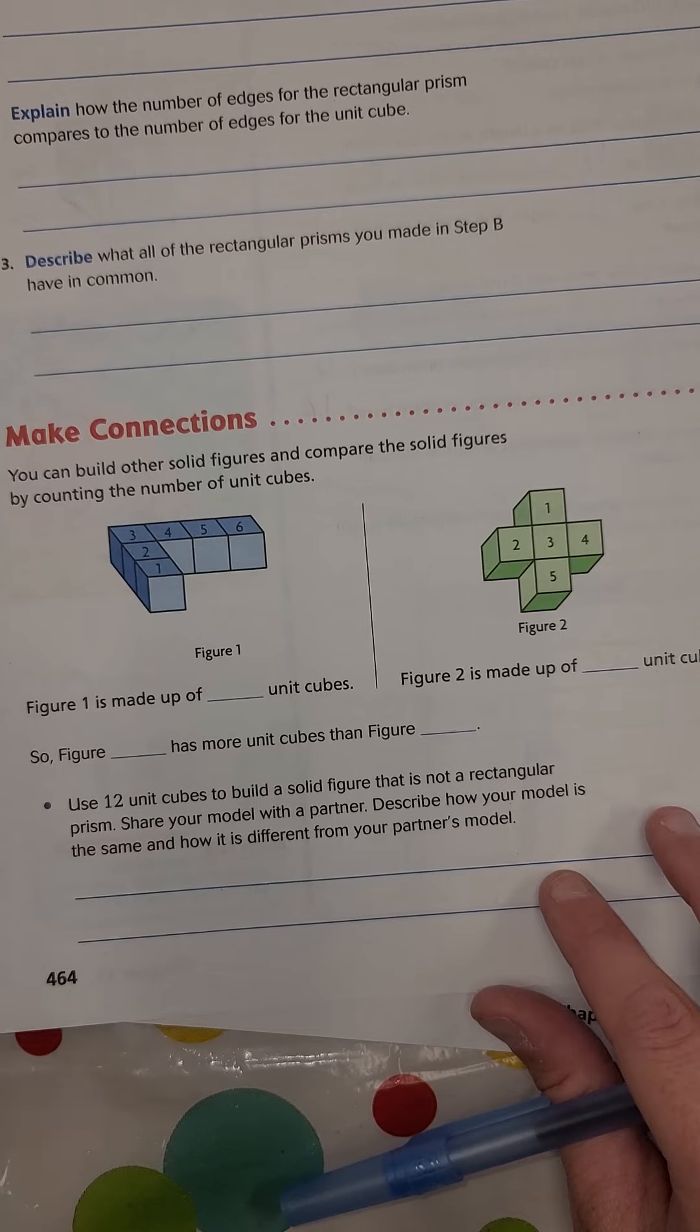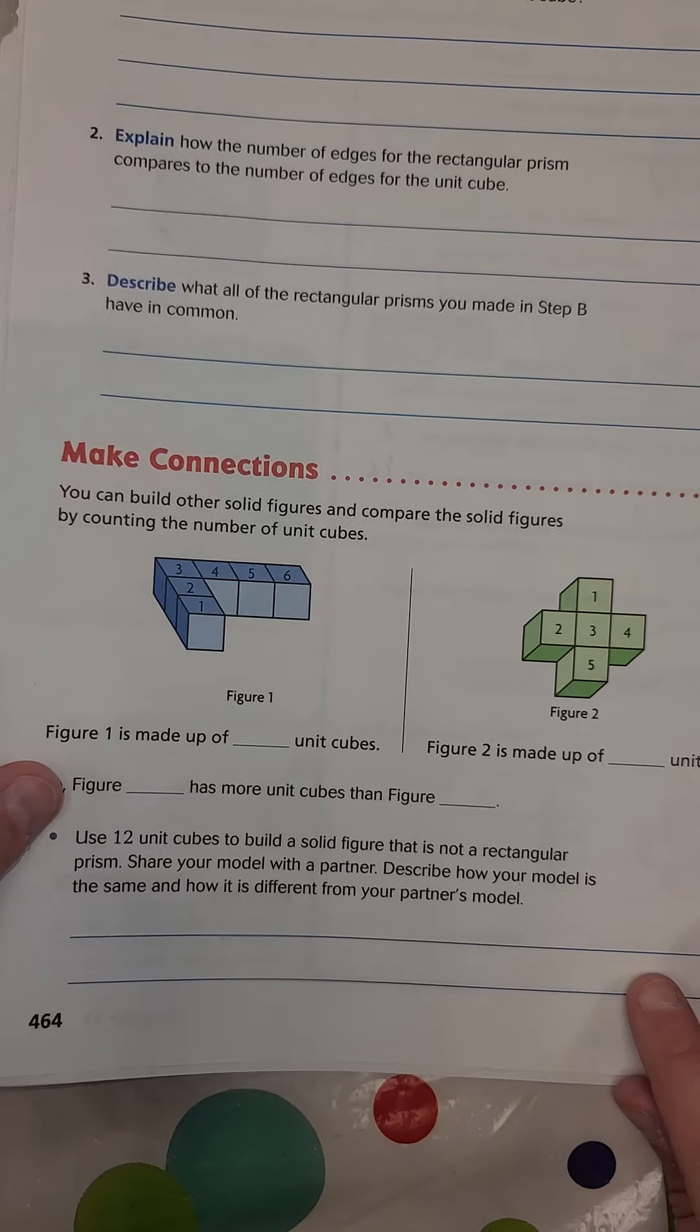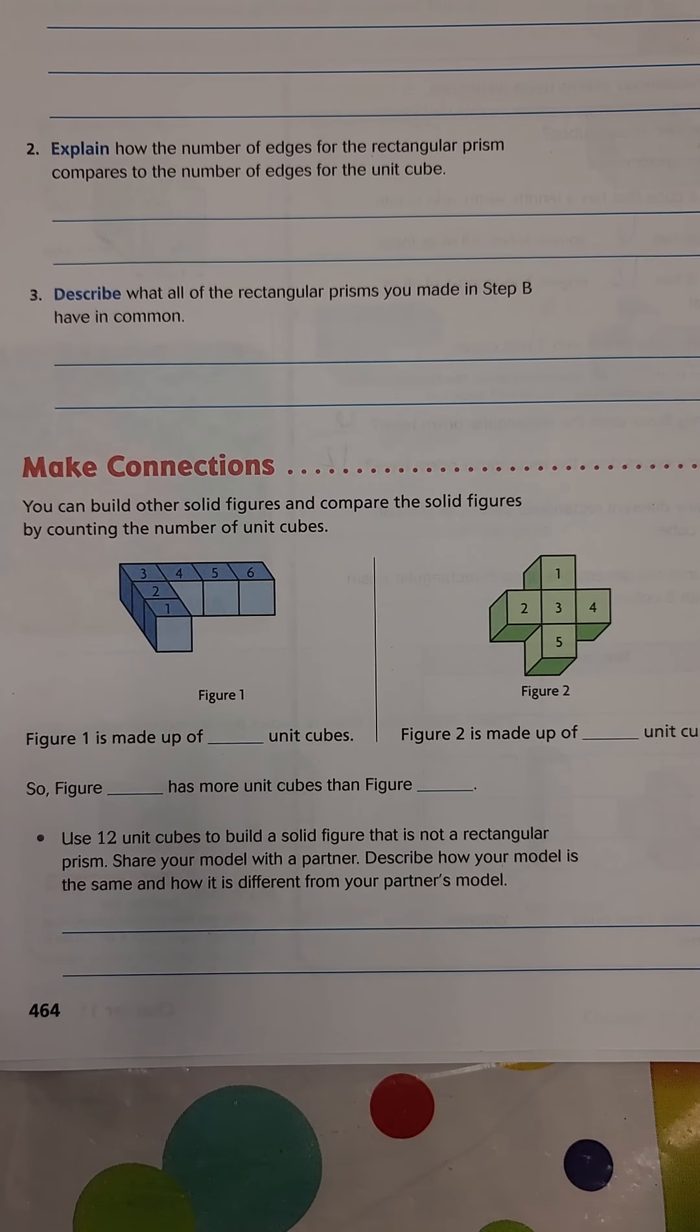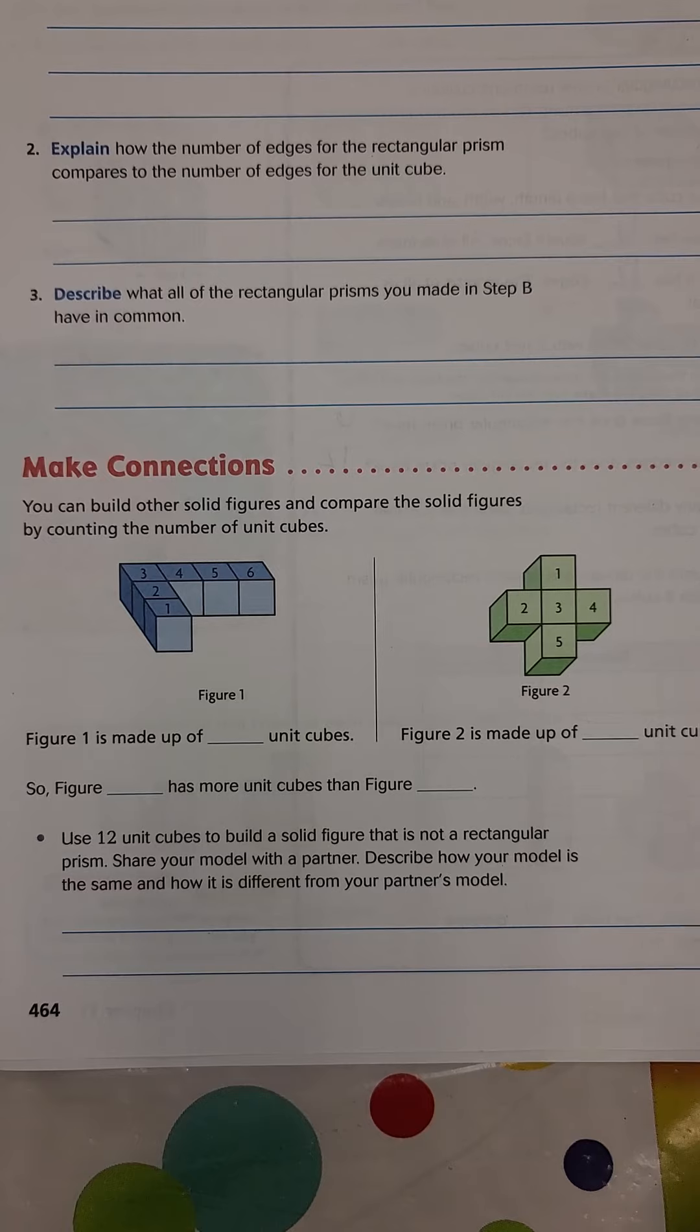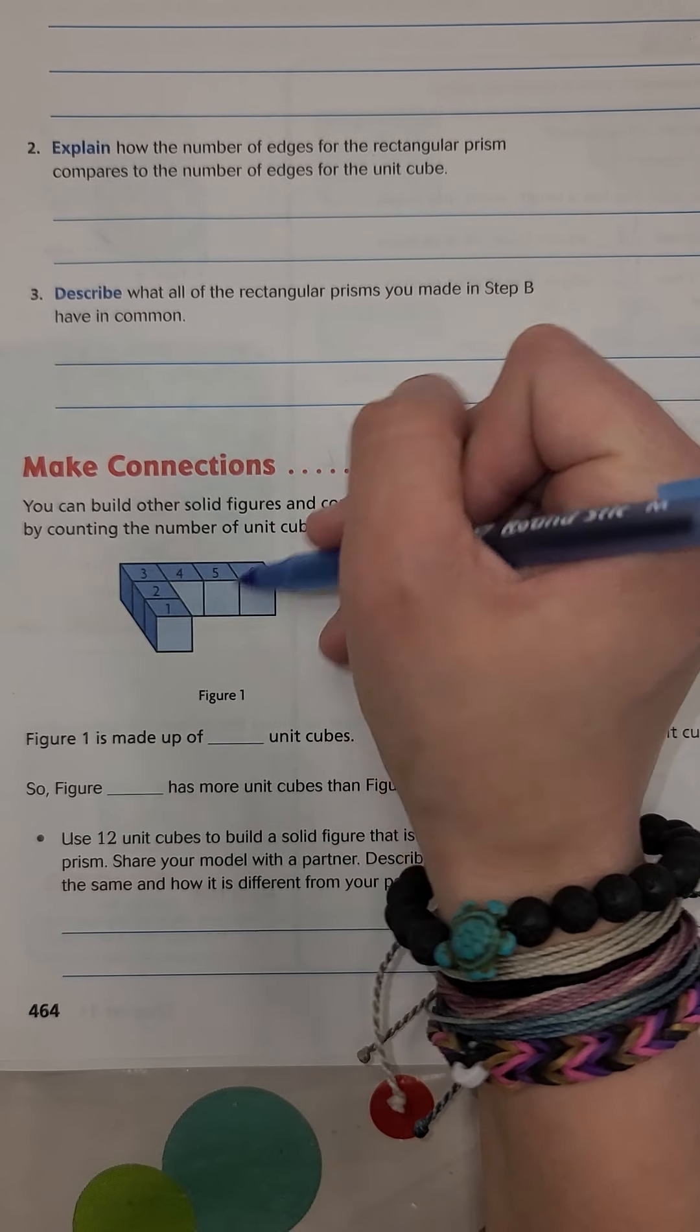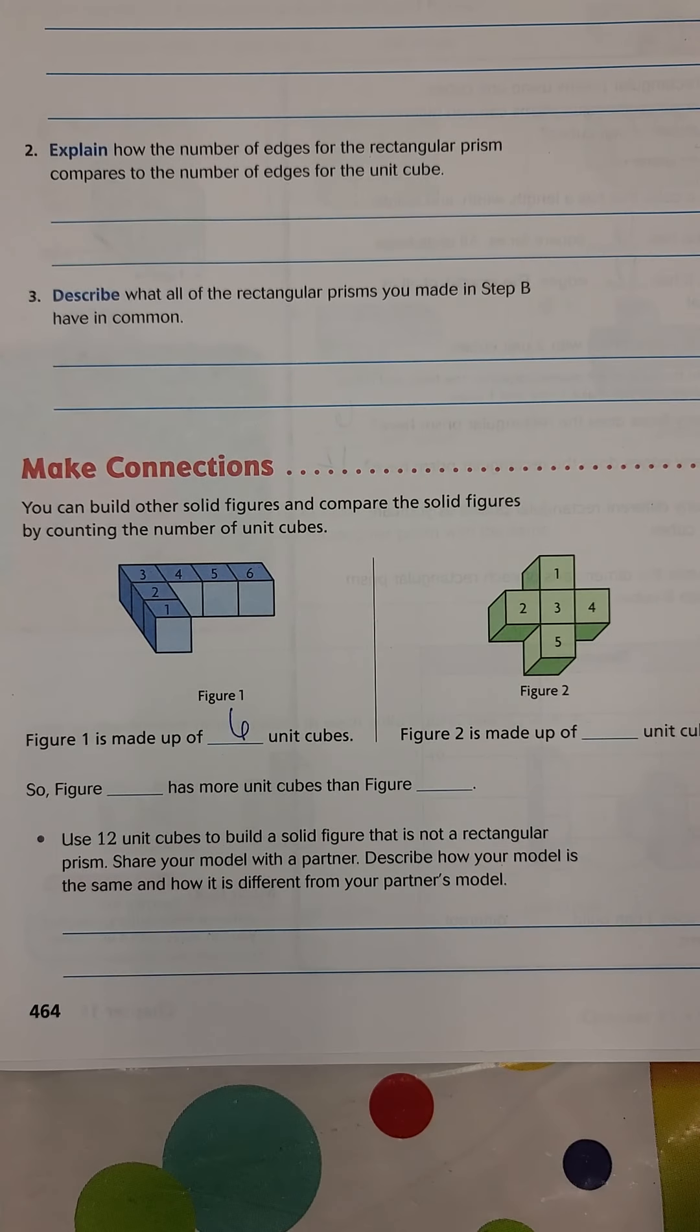So let's go down here to the bottom where it says make connections. Like I said, we're a little bit all over the place. I'm trying to give you the information that you need that I know you're going to actually need. You can build other solid figures and compare the solid figures by counting the number of unit cubes. So with this one, there are one, two, three, four, five, six. So this figure is made up of six unit cubes.